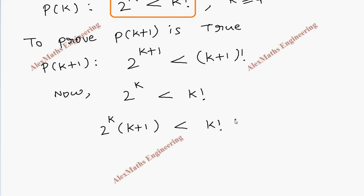This k factorial into k+1, so this will become 2^k, and this entire k+1 we are going to replace it with a value 2, because we know...